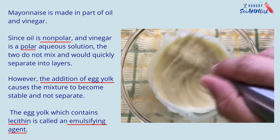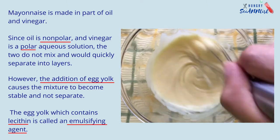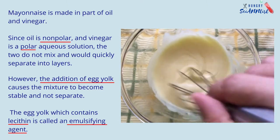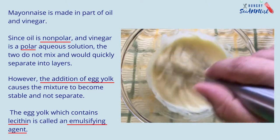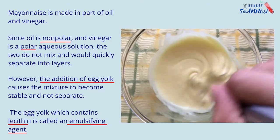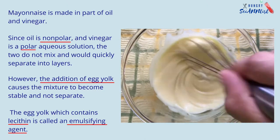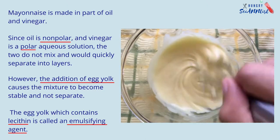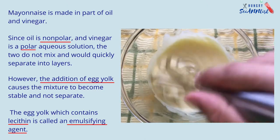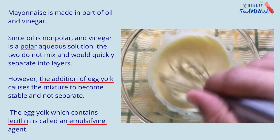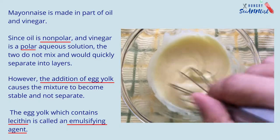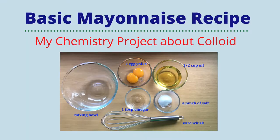However, the addition of egg yolk causes the mixture to become stable and not separate. The egg yolk, which contains lecithin, is called an emulsifying agent.